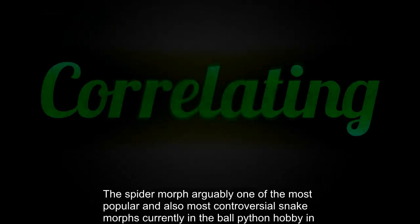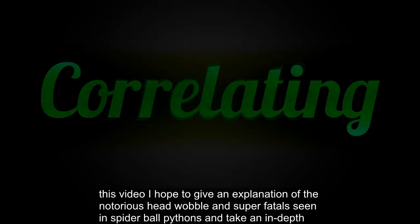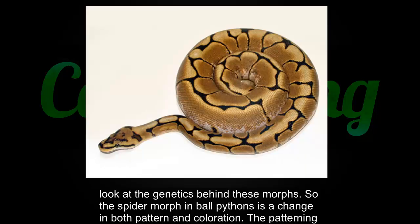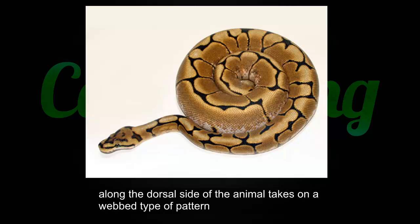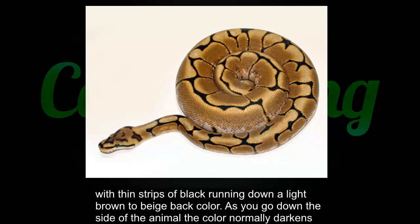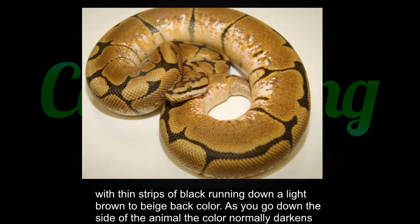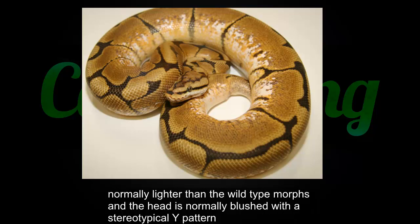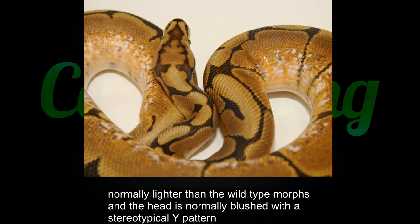The spider morph is arguably one of the most popular and also most controversial snake morphs currently in the ball python hobby. In this video I hope to give an explanation of the notorious head wobble and super fatals seen in spider ball pythons and take an in-depth look at the genetics behind these morphs. The spider morph in ball pythons is a change in both pattern and coloration — the patterning along the dorsal side takes on a webbed type of pattern with thin strips of black running down a light brown to beige back color. As you go down the side of the animal the color normally darkens and then sharply shifts into a white or light beige leading into the ventral side. The eyes of spider ball pythons are normally lighter than wild type morphs and the head is normally blushed with a stereotypical Y pattern on the roof of the head.